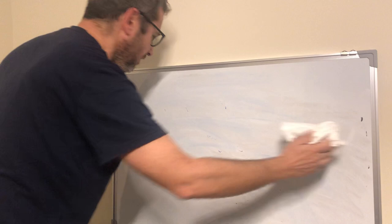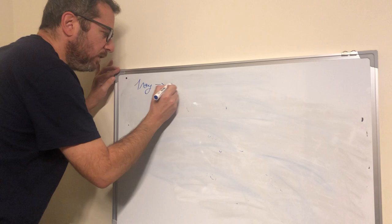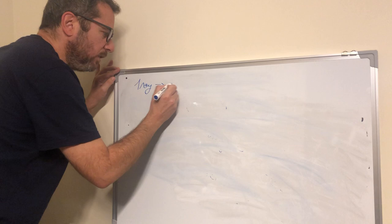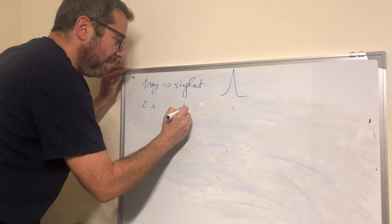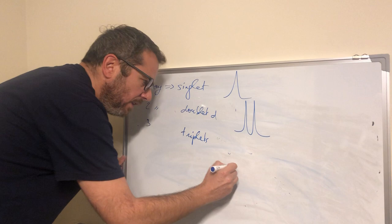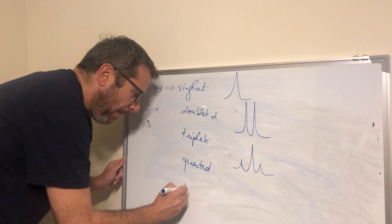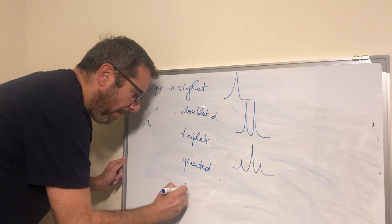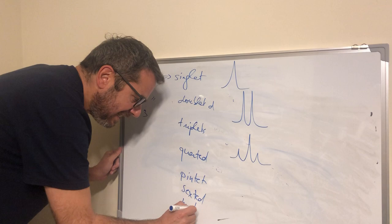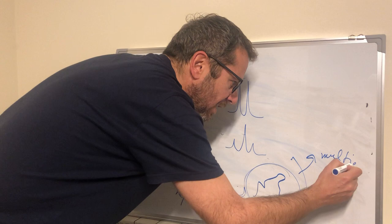A signal can be made of one ray. In this case, we called it a singlet. It is like this. Two rays, doublet D. It is like this. The intensity is equal. We will see the intensity later. Three rays, a triplet. The intensity is 1, 2, 1. We continue with the quartet, pentet, sextet, heptet, seven rays. And after seven rays, the rays are going to be overlapped together. The shape of signals will not be very clear. So, we will call it a multiplet M.